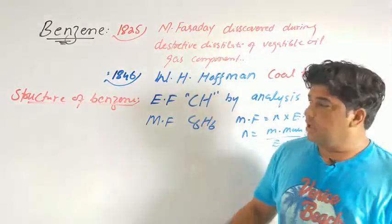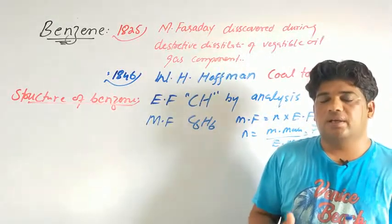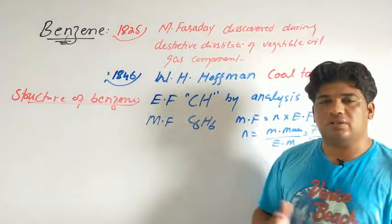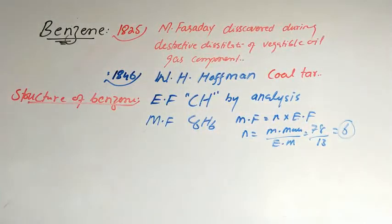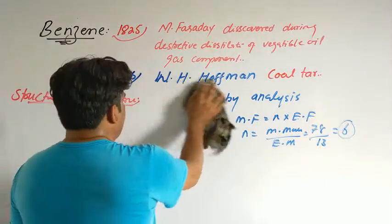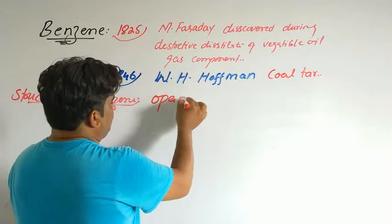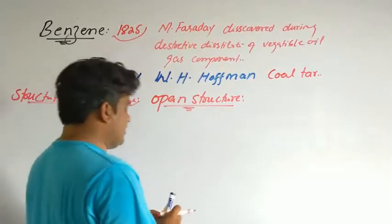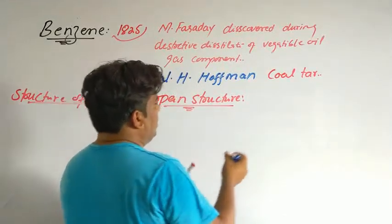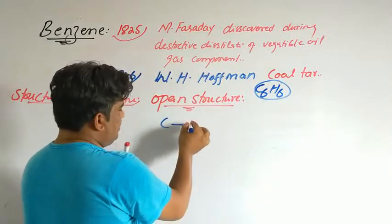When both formulas were experimentally derived as C6H6 for benzene, the next step was to determine its structure — meaning the arrangement of atoms within the molecule. The very first structures proposed for benzene were open structures. Let's see: benzene has 6 carbons and 6 hydrogens. Let's look at its open structure.